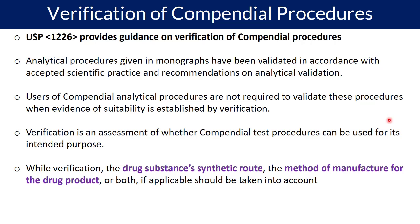Similarly, consider the manufacturing procedure of your drug product — the processes used and the excipients used during manufacturing. The sample matrix can play a critical role in terms of extraction and degradation of the drug substance in the drug product, and this can impact the performance of your monograph method. The closer your process is to the monograph, the better your chances of meeting the requirements.